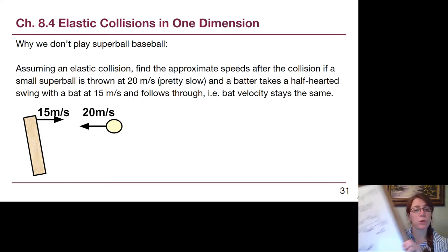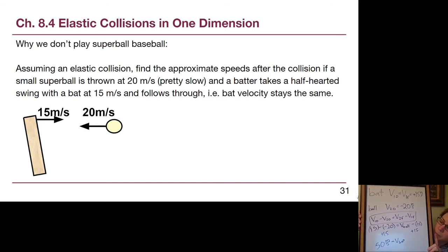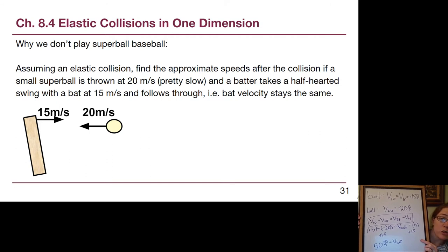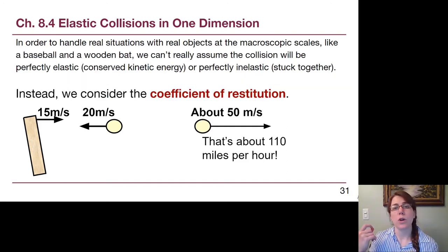Without anyone trying all that hard, so the pitcher doesn't try that hard, the batter doesn't try that hard, if we were using a super ball, a super bouncy baseball, it would leave the plate going at over 110 miles an hour. This is not an elastic collision, and if we want to handle real situations like a baseball and a bat, we can't assume that things are going to be perfectly elastic, but we also can't assume the other extreme, perfectly inelastic, where they're stuck together. There is a way for us to handle the in-between situations.